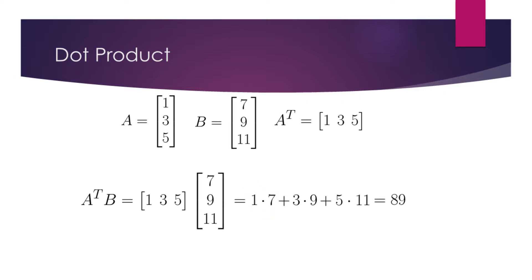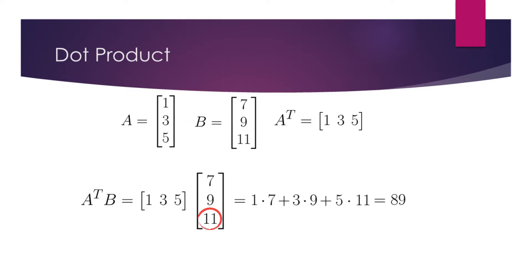In the second column of the first matrix we have 3, and in the second row of the second matrix we have 9. We multiply these and continue. In the third column of the first matrix we have 5, and in the third row of the second matrix we have 11. We multiply these two, then sum up all the results. We see that the dot product of A and B is 89.